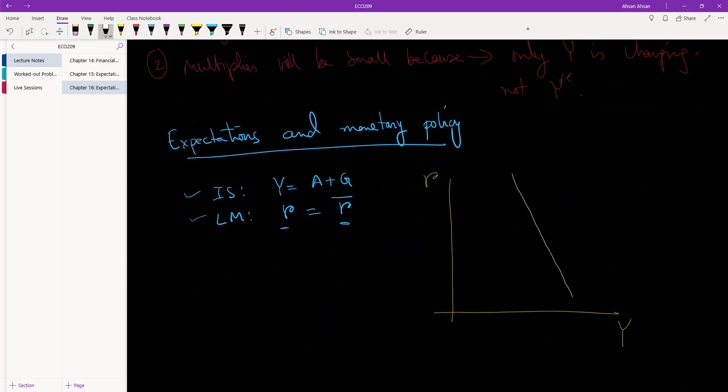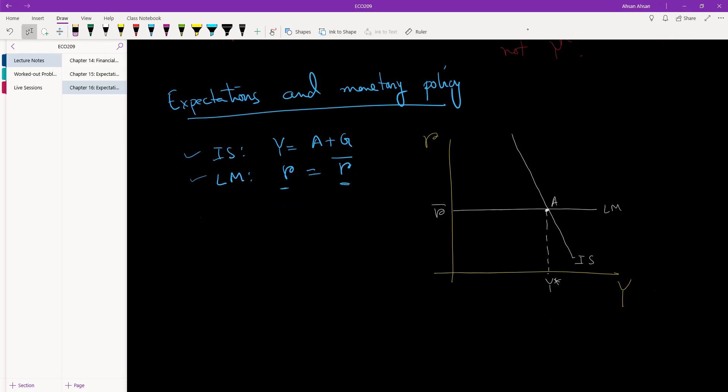The IS curve is steep. This LM curve is still a straight line. So suppose this is the policy rate, five percent, six percent, whatever it may be. This is it, and this is our equilibrium. Let's call this Y star. So we are over here.